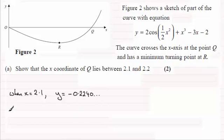Then if you put x equals 2.2 in, you should get a positive value for y: 0.5464 and so on.